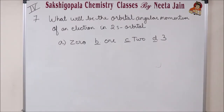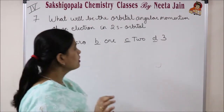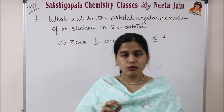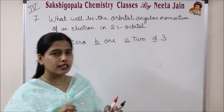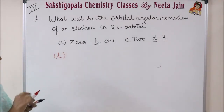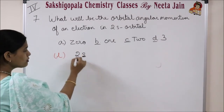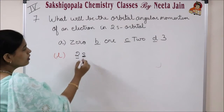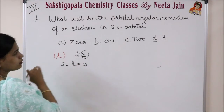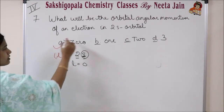Question number 7: what will be the orbital angular momentum of an electron in 2S orbital? Orbital angular momentum relates to the azimuthal quantum number L. For 2S orbital, the principal quantum number is 2, orbital is S, and for s orbital the value of L is 0. So orbital angular momentum is 0. Correct answer is A.